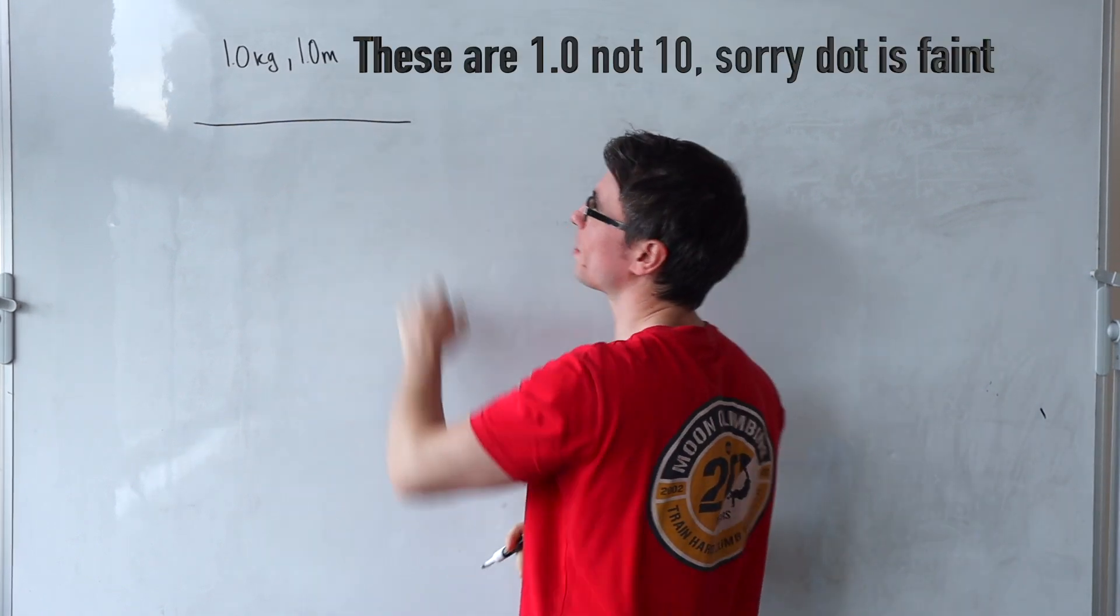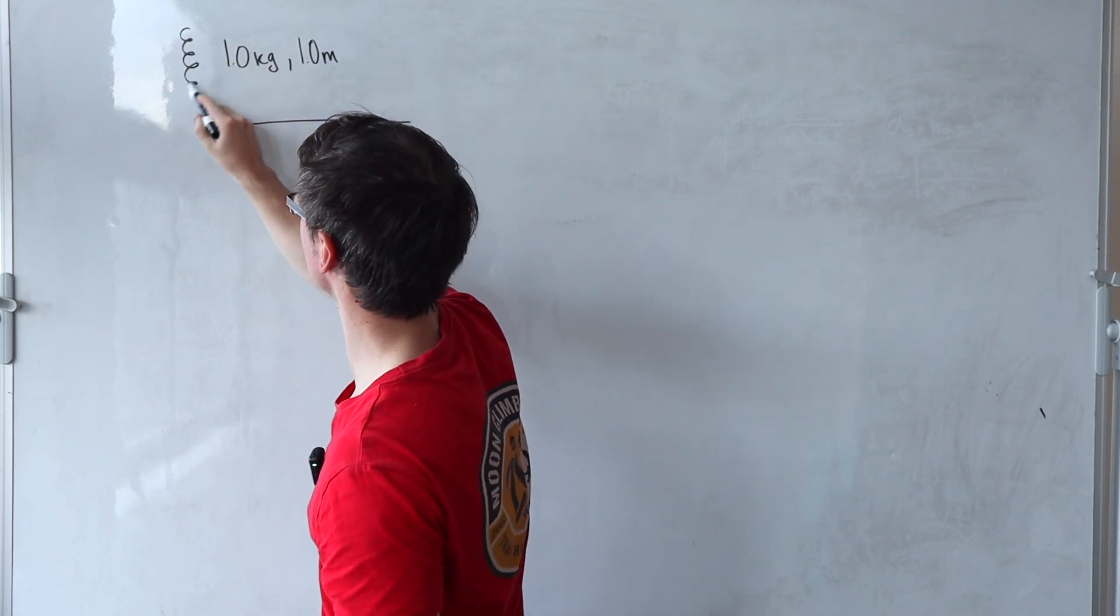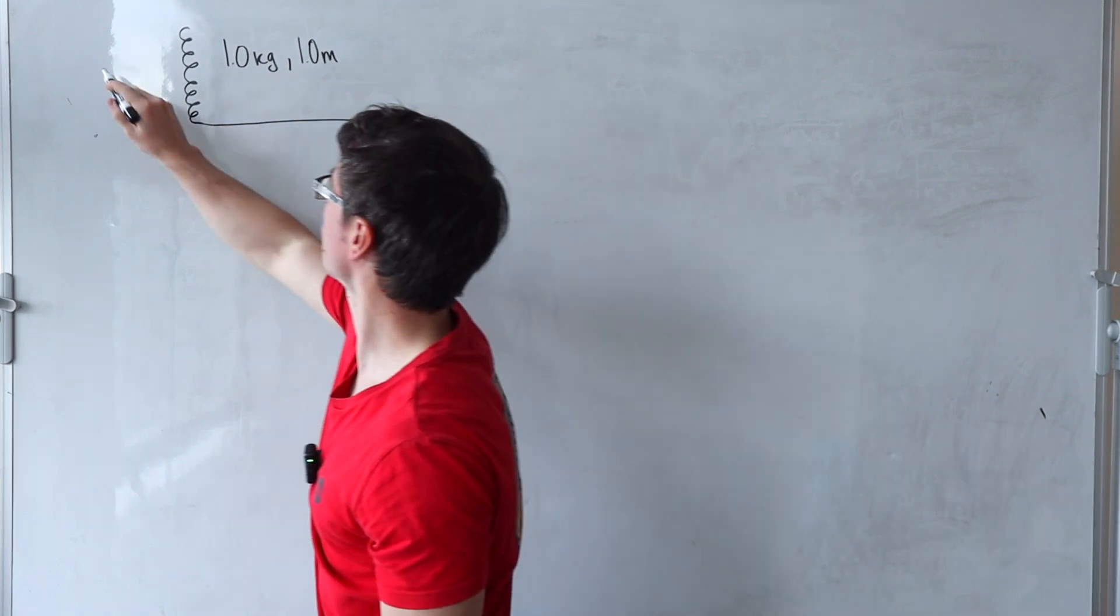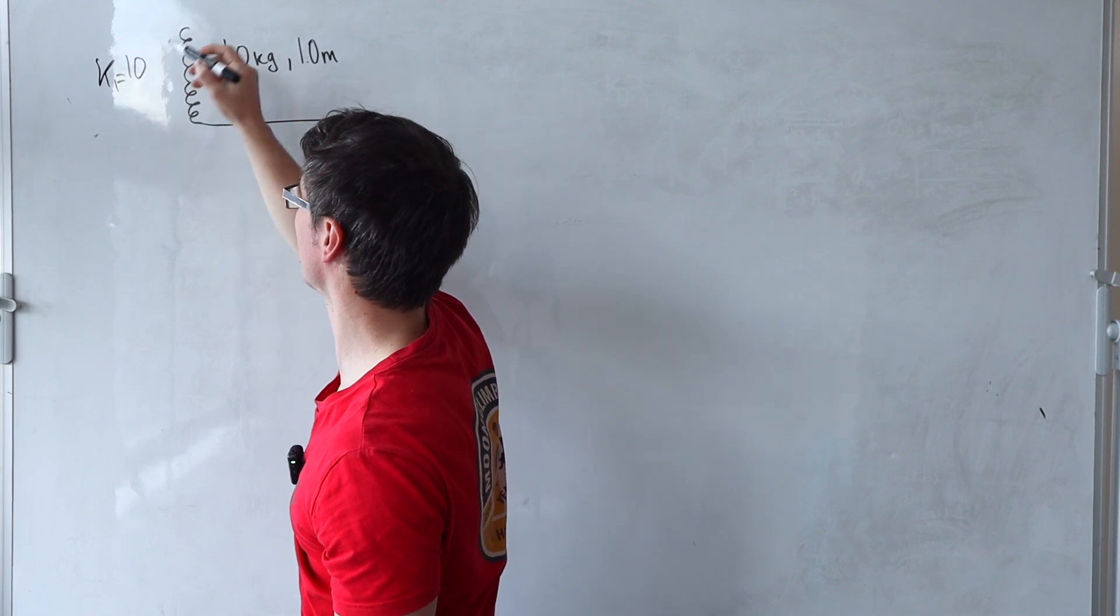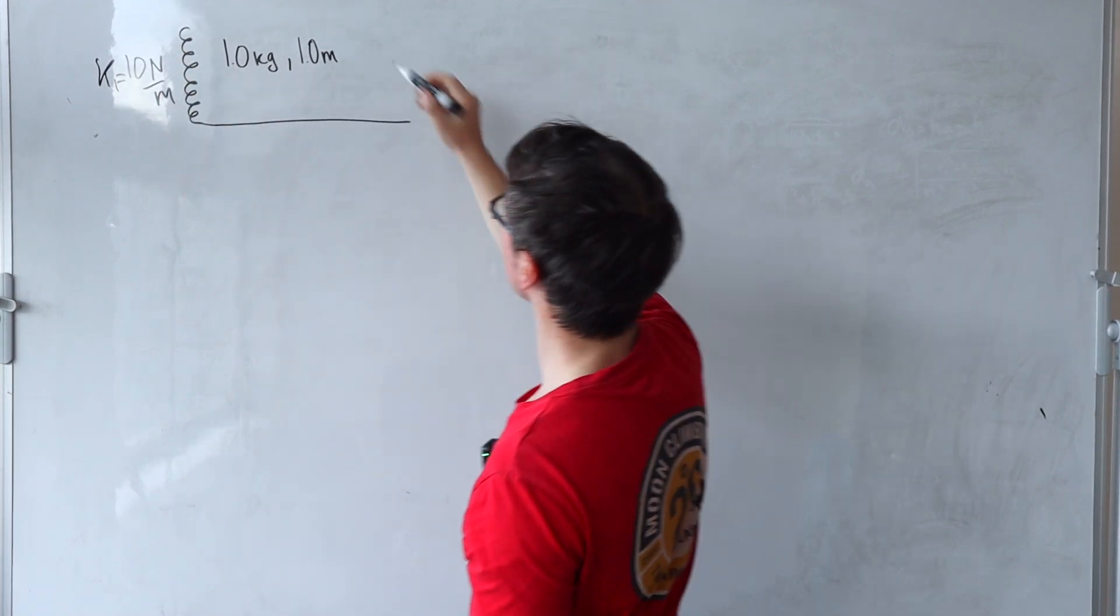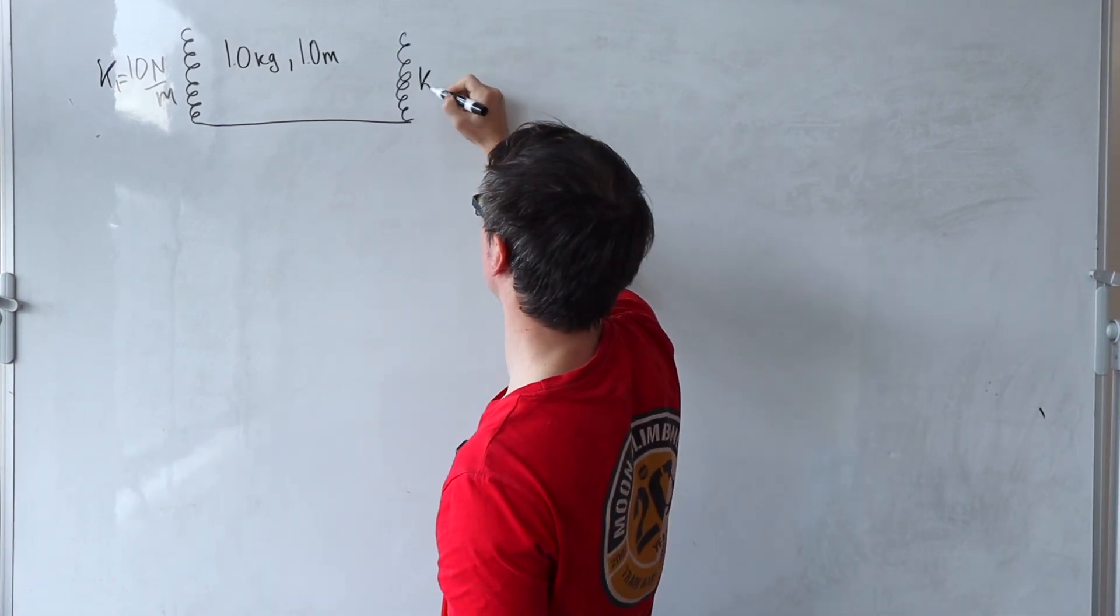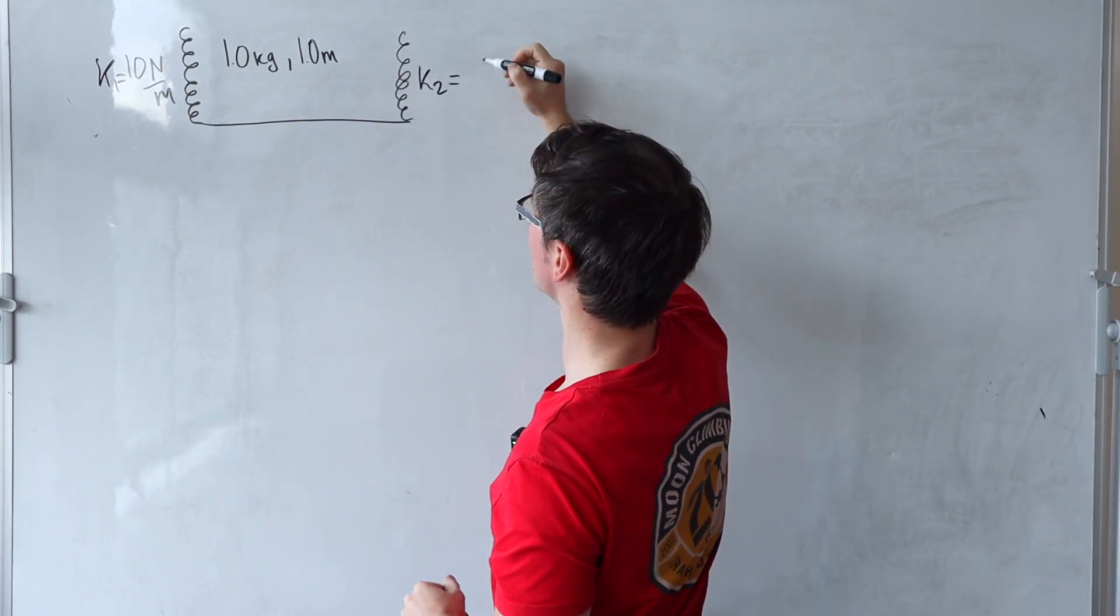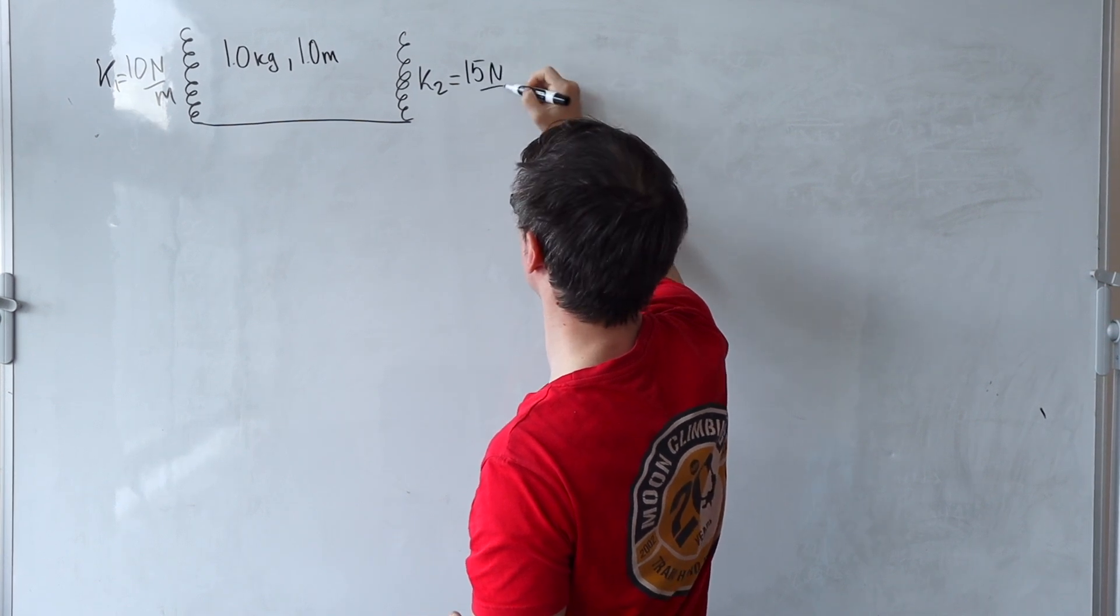The mass will be uniformly distributed and let's support this with a couple of springs with different spring constants. Spring one has a spring constant of 10 newtons per meter and let's support it on the other side with a different spring constant. Let's call that spring two with a force constant of 15 newtons per meter.